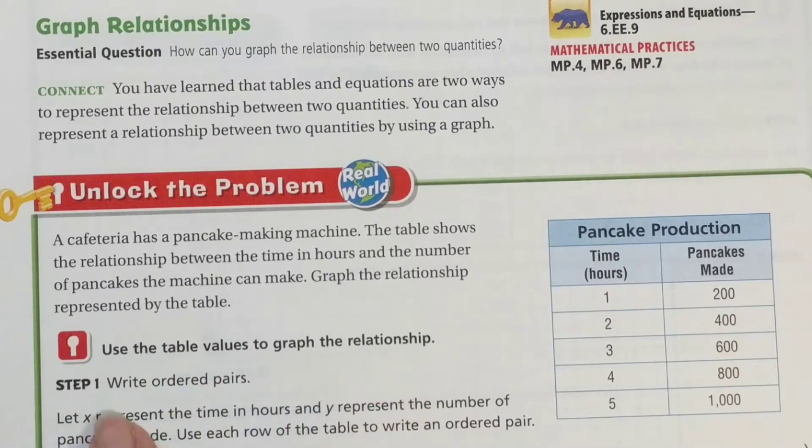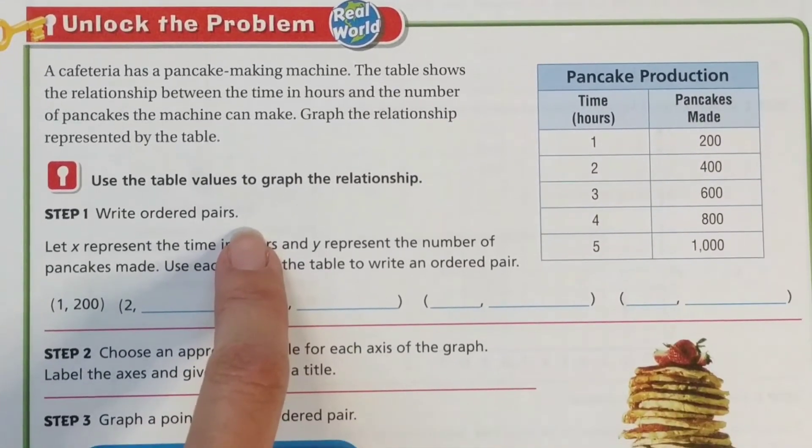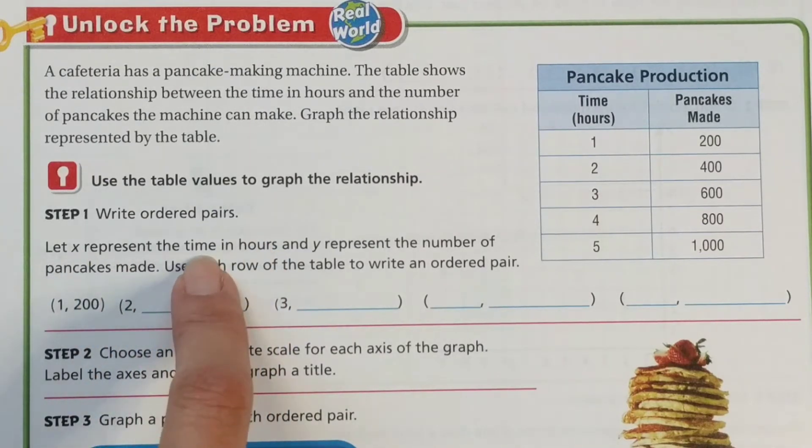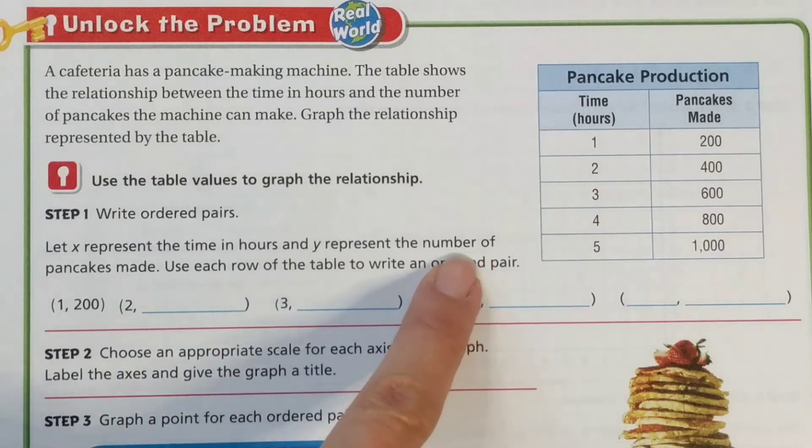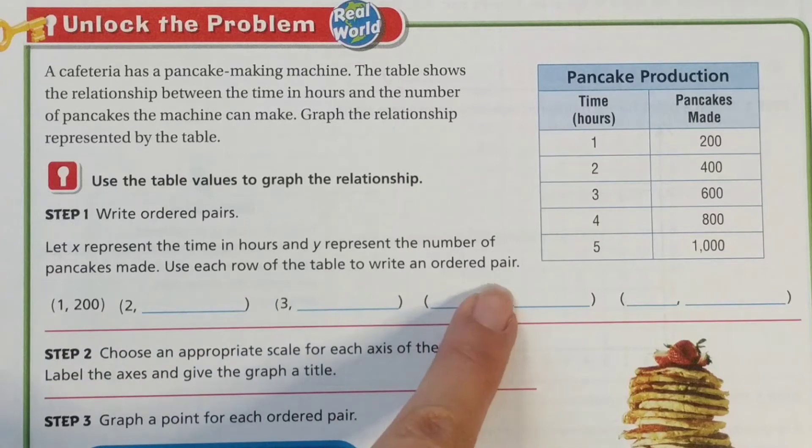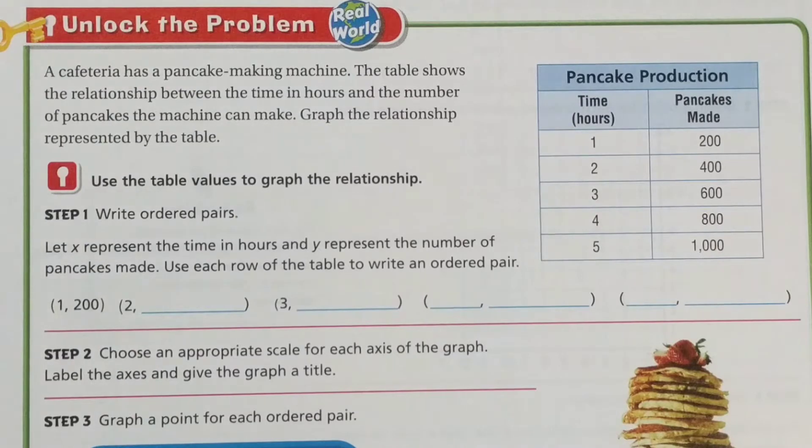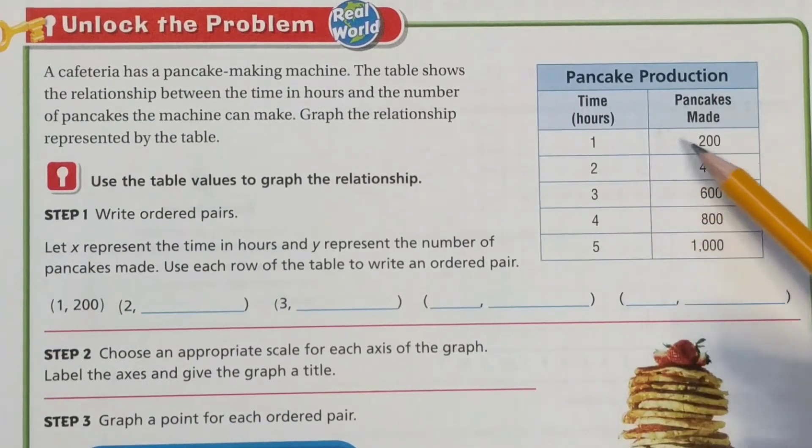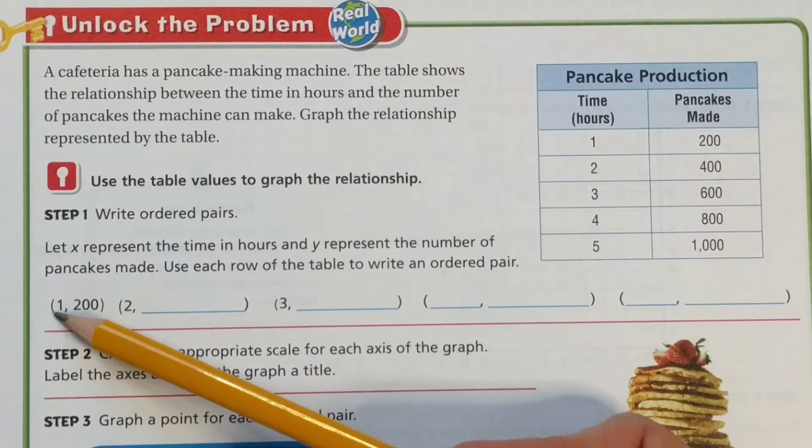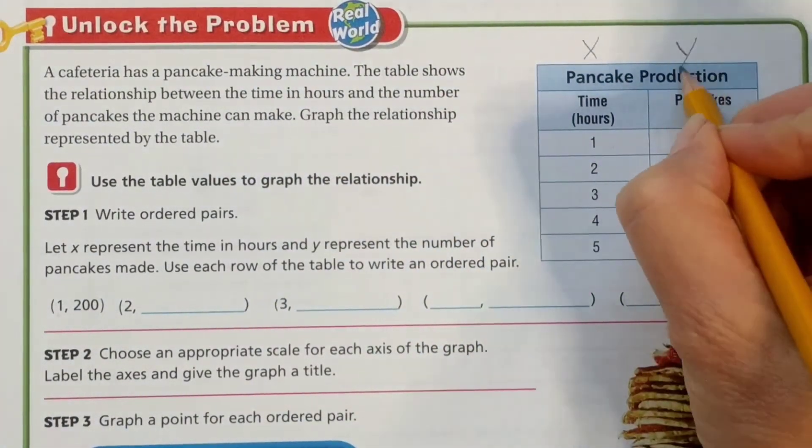Alright, use the table values to graph the relationships. First, write the ordered pairs. And if you remember from the last lesson, ordered pairs always are in alpha order. So X comes before Y. Let X represent the time in hours, and Y represent the number of pancakes made. Use each row of the table to write an ordered pair. So they did the first one for us. So they have, in one hour they made 200 pancakes. One hour, 200 pancakes. This is going to be our X coordinate. This is going to be our Y coordinate.